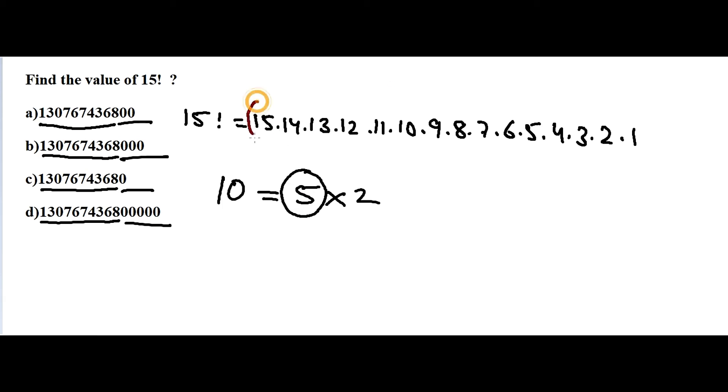You can see this 15 is 5 times 3, so one 5. This 10 can give you one another 5 because 5 times 2. And this is the 5. So totally we have three 5s, so totally we get three zeros.